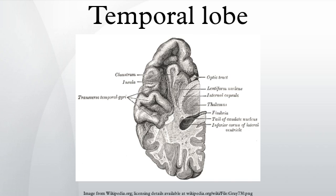Research has shown that lesions in the hippocampus of monkeys results in limited impairment of function, whereas extensive lesions that include the hippocampus and the medial temporal cortex result in severe impairment.